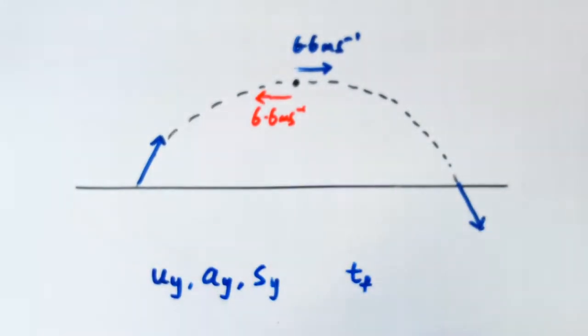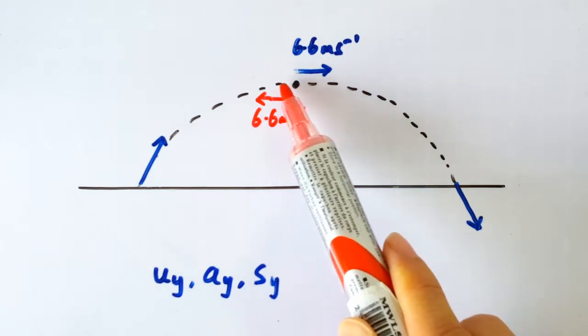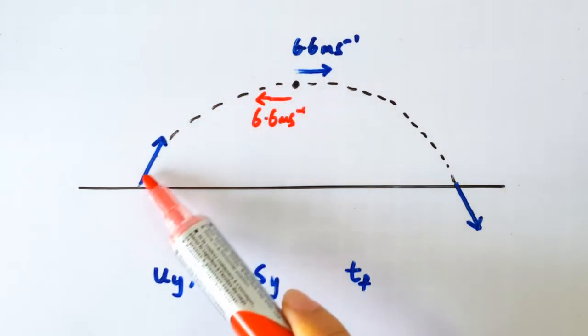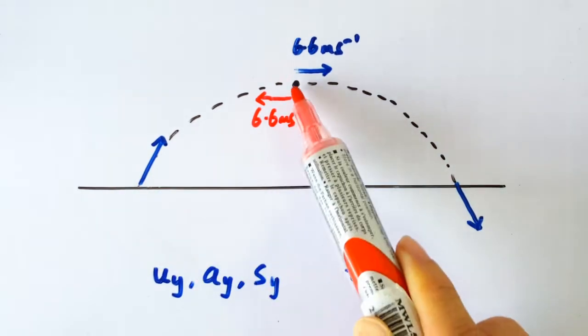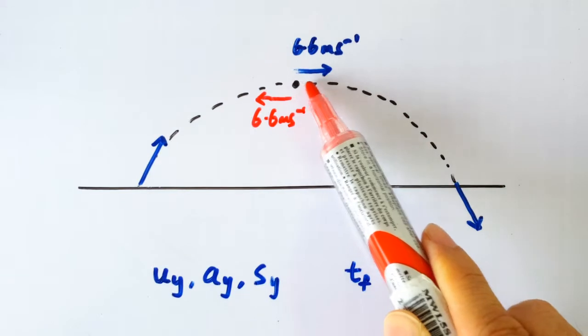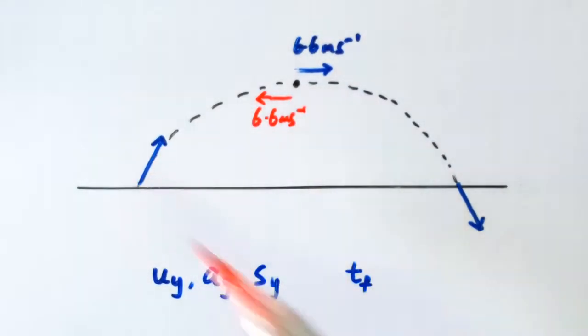of 6.6 meters per second, then this projectile would trace back exactly this same path and land at the original spot here, because this motion is exactly the same as this motion if the wall was not there. But